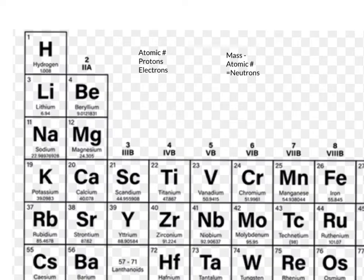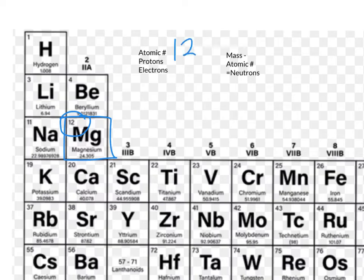We're going to start by solving for the number of protons, electrons, and neutrons in magnesium, which is number 12 on the periodic table. The atomic number is going to be in the top corner on this periodic table. For magnesium, that number is going to be 12. The protons will also then be 12, and the number of electrons will be 12.